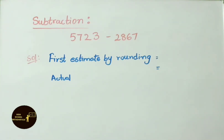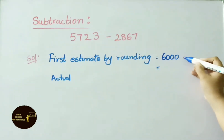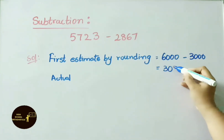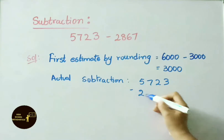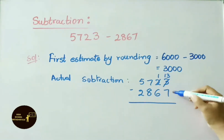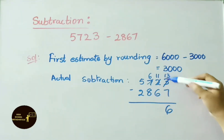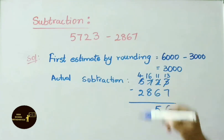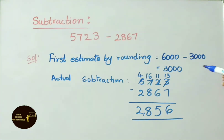Now let us see subtraction by estimation. 5,723 minus 2,867: nearest thousand for 5,723 is 6,000, and nearest thousand for 2,867 is 3,000. Subtracting gives estimated value 3,000. Actual subtraction: borrow to get 13 minus 7 is 6; borrow again, 11 minus 6 is 5; borrow again, 16 minus 8 is 8; 4 minus 2 is 2. Actual answer is 2,856, and our estimation value is 3,000.